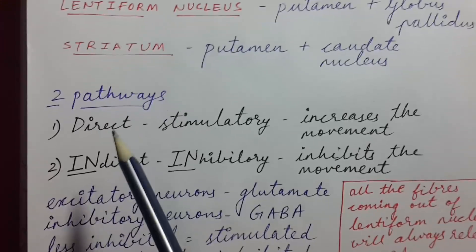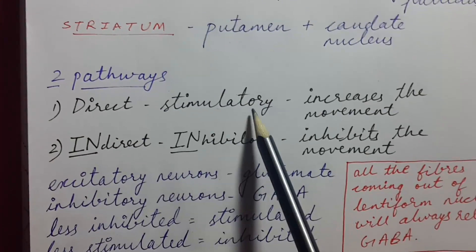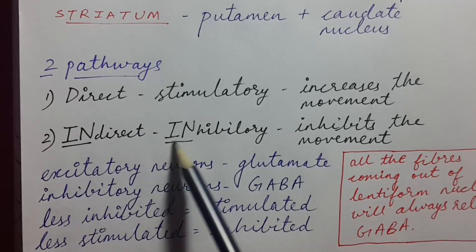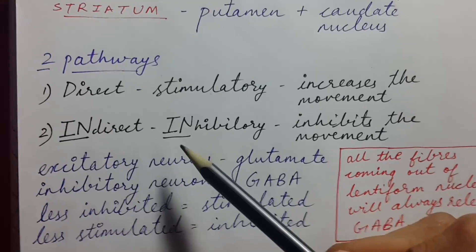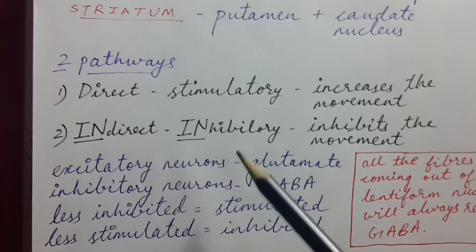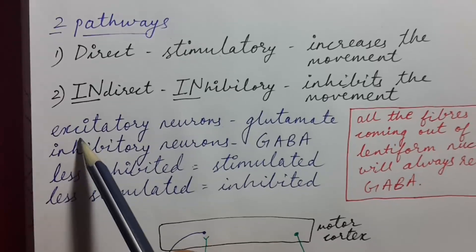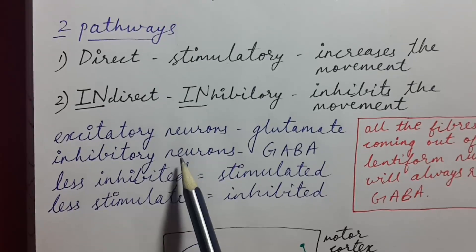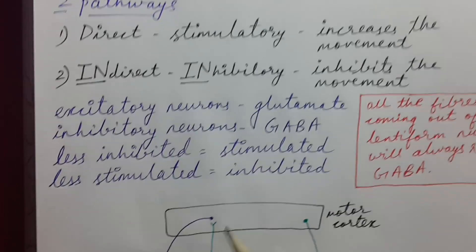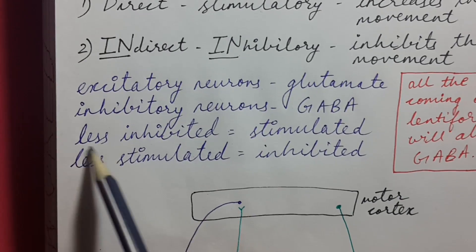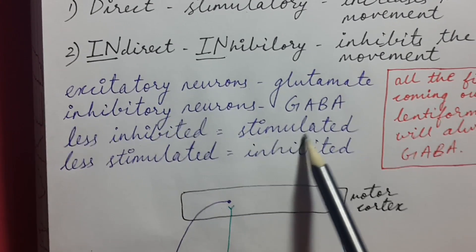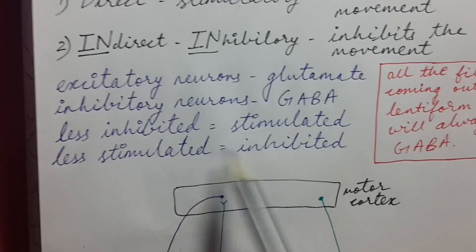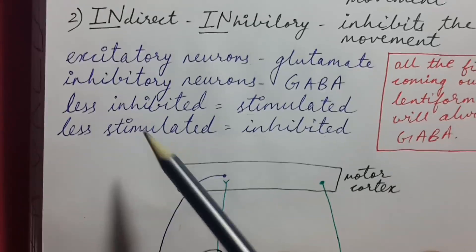There are two pathways in the basal ganglia. The first is the direct pathway, which is stimulatory — it increases movement. The second is the indirect pathway, which is inhibitory — it inhibits movement. Proper coordination between both results in proper movement. All excitatory neurons in the basal ganglia secrete glutamate, and all inhibitory neurons secrete GABA. When a neuron is less inhibited, it is effectively stimulated, and when less stimulated, it is effectively inhibited.